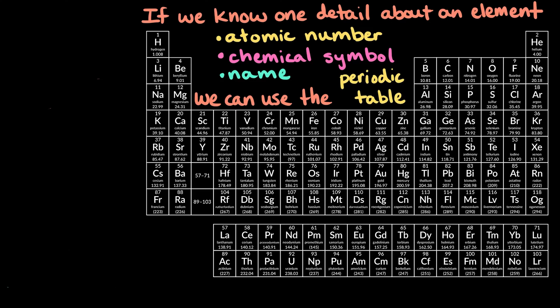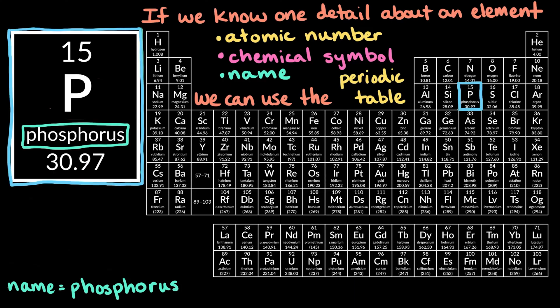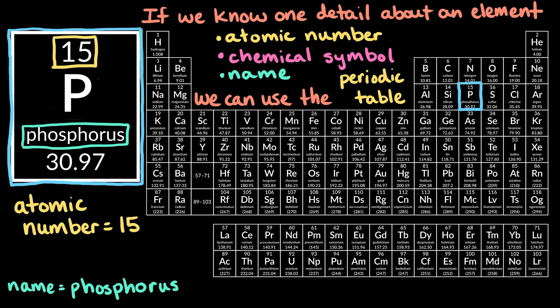Say we have the element phosphorus. What is its atomic number and chemical symbol? Looking through the periodic table, we can find phosphorus and see that its atomic number is 15 and its chemical symbol is P.